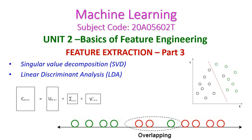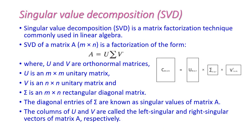In this machine learning class, we will see the singular value decomposition, that is SVD — how a very big matrix will be divided into three smaller matrices. And after that, the linear discriminant analysis — how overlapping classes are rectified by using LDA. The first one is singular value decomposition, which is a matrix factorization technique.